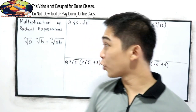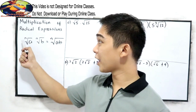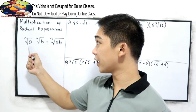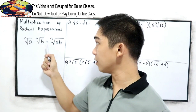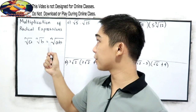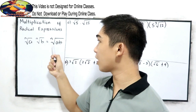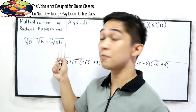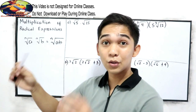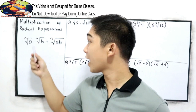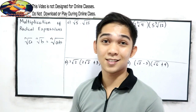So if we have n root of a times n root of b, that is equal to n root of a times b. If they have the same index, just multiply the radicands.